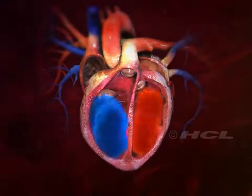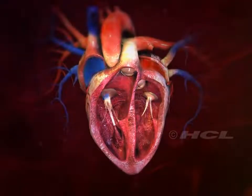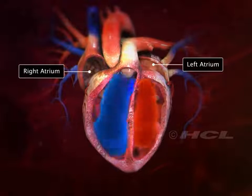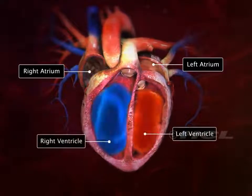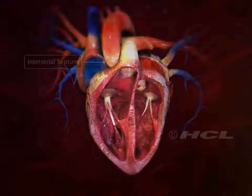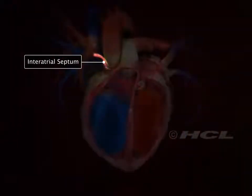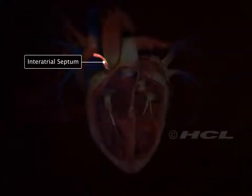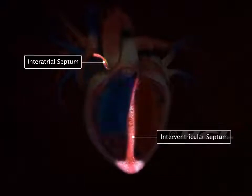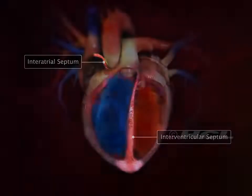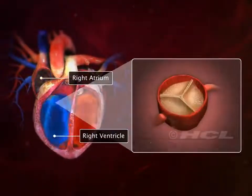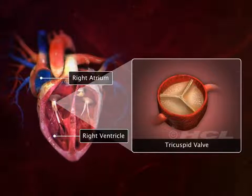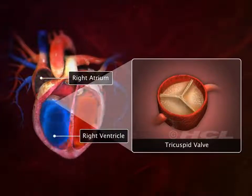The human heart has four chambers. The two upper chambers are the atria and the two lower chambers are the ventricles. The inter-atrial septum separates the two atria, and the inter-ventricular septum is the partition between the two ventricles. The right atrium and right ventricle are connected through a tricuspid valve — as the name suggests, it has three leaflets or cusps.